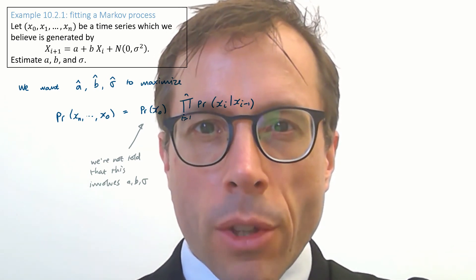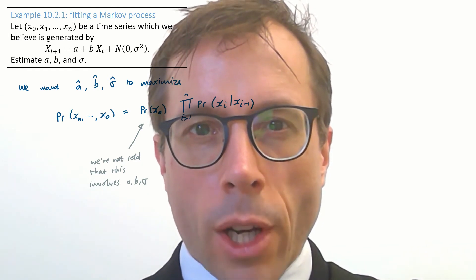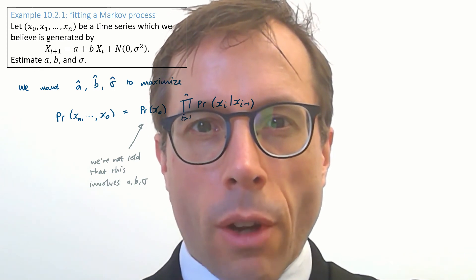So the parameters we want to estimate only come into the second part of the expression, the big product, so that's all we need to maximise over.